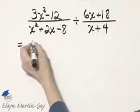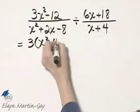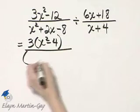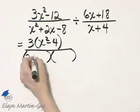In the first numerator, there's a common factor of 3, and I have left x squared minus 4. Then in that first denominator, no common factors, so let's see if it factors as two binomial factors.